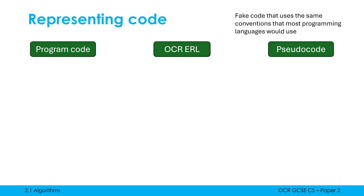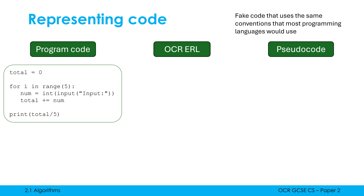Let's say my problem is I need to find the average of five numbers. I might decide to do the mean average. And if I was to code this in Python, it might look similar to this. I might use a for loop, I might decide to ask the user five times to enter a number, I add it to the total, and then I divide the total by five. That is my algorithm and how I implemented it in Python.